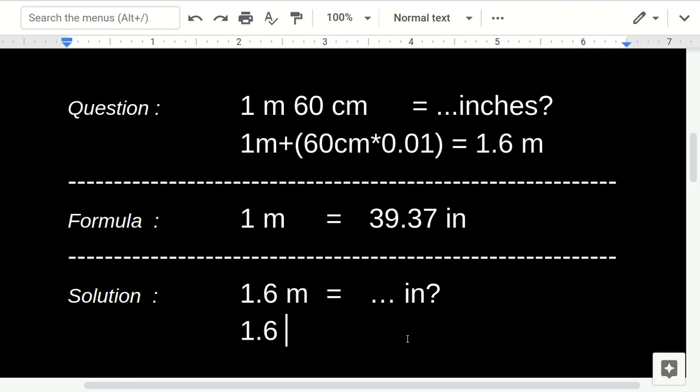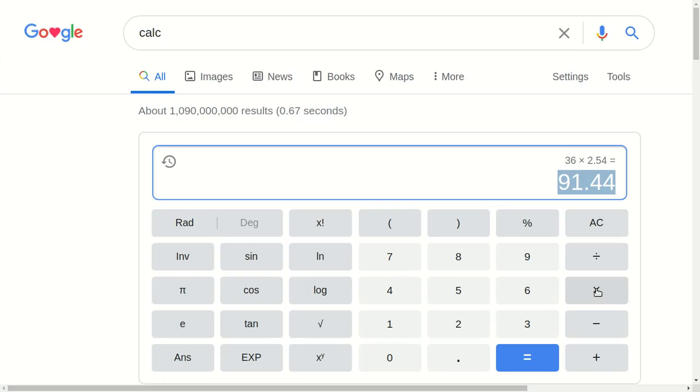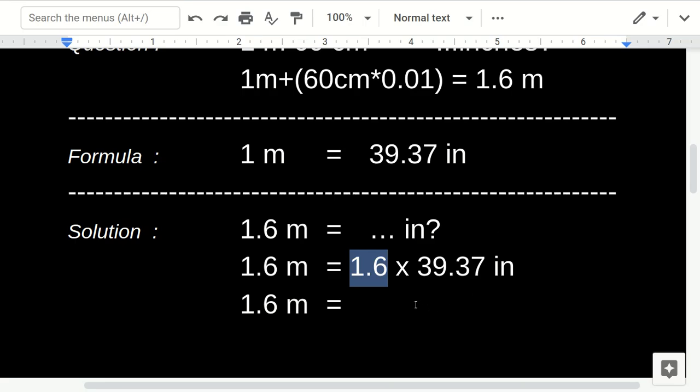And then, 1.6 meters equals... Okay, let's run a calculator. 1.6 meters, 1.6 times 39.37. And that's our answer.